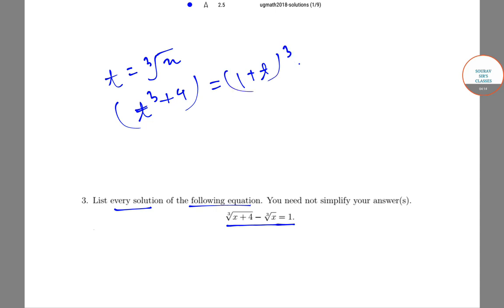Solving this, we'll get the answers as t = (-1 ± √5)/2. This is the required answer.